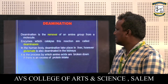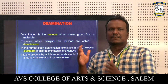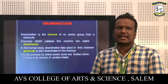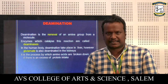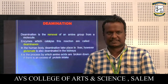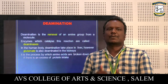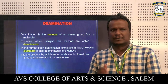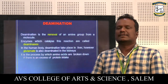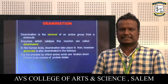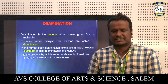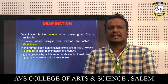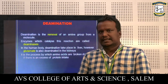Deamination is the removal of an amino group from an amino acid. The enzymes catalyze the deamination. In the human body, deamination takes place in the liver; however, deamination also occurs in the kidneys. It is the process by which amino acids are broken down if there is an excess of protein intake.